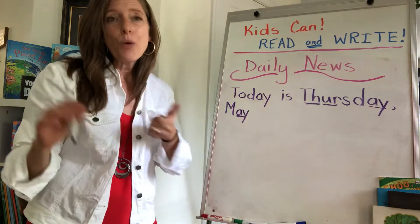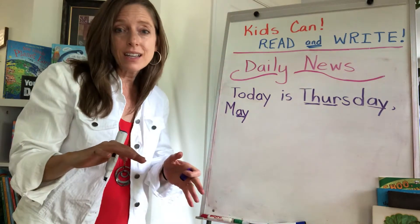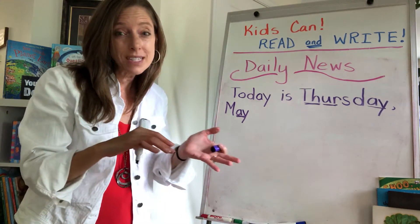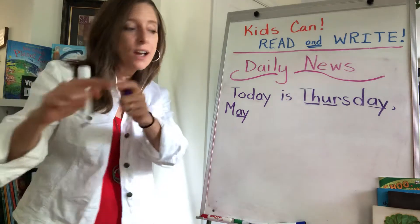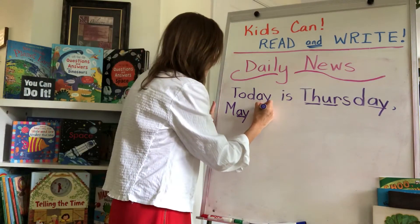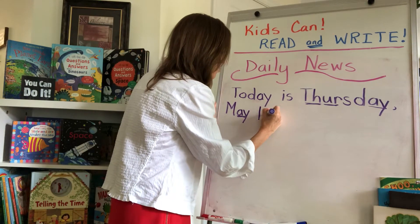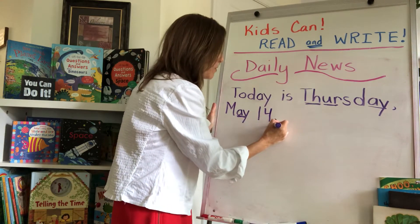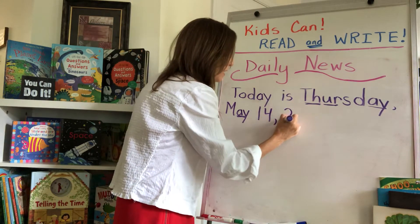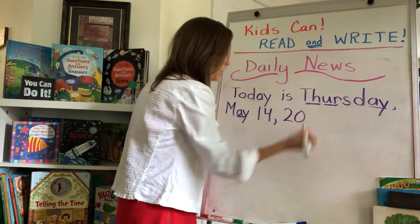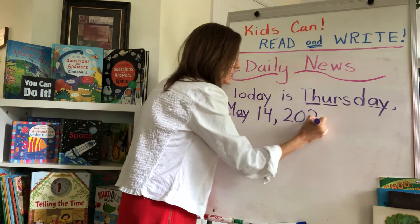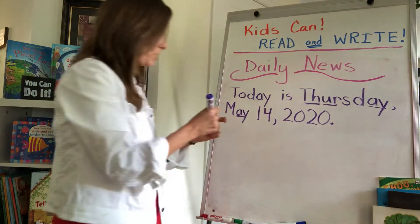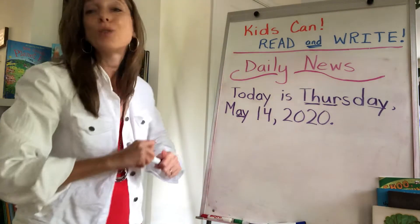Yesterday was the 13th, so what would today be? What comes after 13? 1, 2, 3, 4, 5, 6, 7, 8, 9, 10, 11, 12, 13 — 14! All right, 1 and a 4 is 14. Today is Thursday, May 14th, comma — what year is it? 20 — 2, 0 is 20. And then 20 again — 2020. Period.